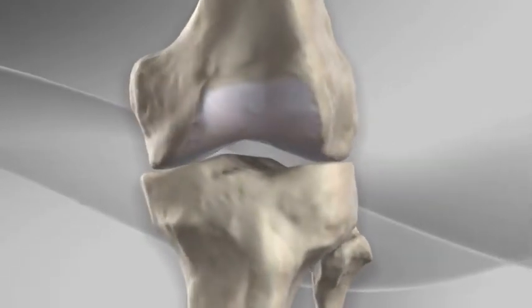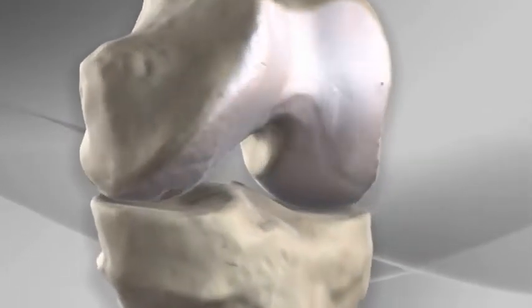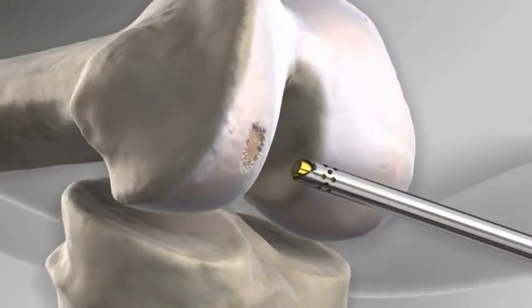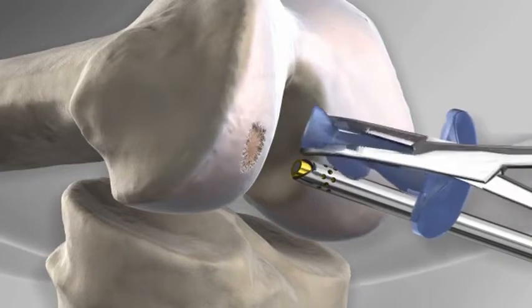The surgeon begins by creating two portals or small incisions in the front of the knee. The arthroscope is inserted through one portal and a passport cannula is inserted through the other.